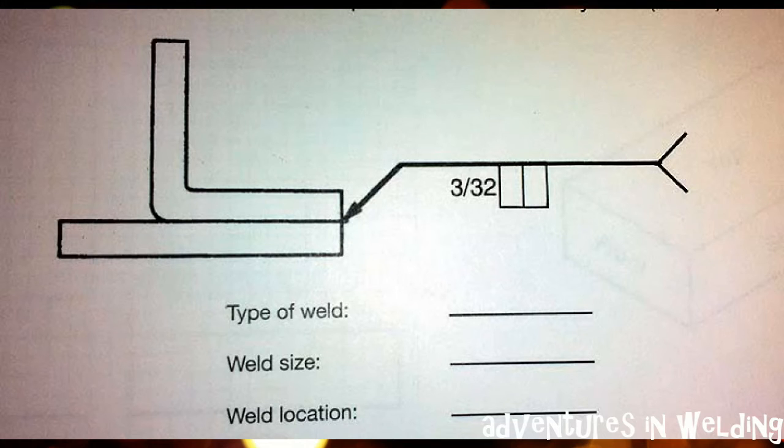Alright, this one should be a little bit easier. Let's work on this one together. Since those two pieces of metal are stuck like that and the arrow's pointing there, this will be an edge weld. They want the weld size to be 3/32 of an inch, and the location of the weld will be on the arrow side. You guys get that one? I'll put the key up here so you can see it.